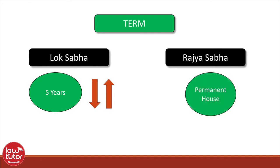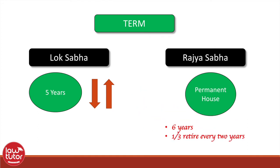The Rajya Sabha is a permanent house and cannot be dissolved like the Lok Sabha. Rajya Sabha MPs are elected for a period of six years, but one third of its members retire after every two years. An election held to fill a vacancy arising other than by the retirement of a Rajya Sabha MP on expiration of his term is called a by-election. A member elected in a by-election remains a member for the remainder of the term of the member who had resigned, died, or was disqualified under the 10th schedule.